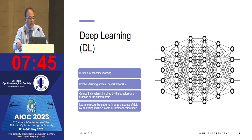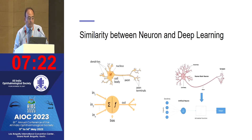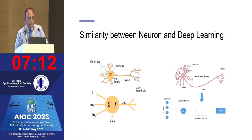Deep learning is a subfield of machine learning and involves training artificial neural networks. It is inspired by the structure and function of the human brain and can learn to recognize patterns in large amounts of data by analyzing multiple layers of interconnected nodes — similar to how neurons work, with dendrites acting as inputs.